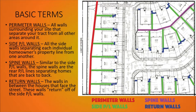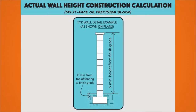Learning these wall terms will help you communicate and differentiate between wall types, which is really important. For example, many cities and counties require that all walls visible from the street must be masonry block walls — that's the perimeter and return walls. But for walls not visible from the street, such as side PL walls or spine walls, you can get away with installing vinyl, which is a whole lot cheaper.